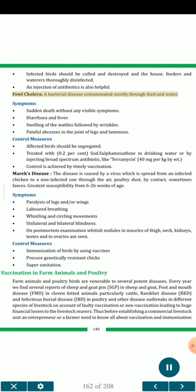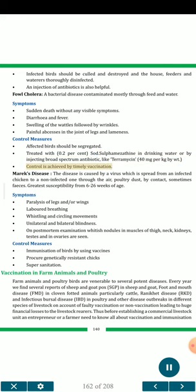Fowl cholera — a bacterial disease contaminated mostly through feed and water. Symptoms: sudden death without any visible symptoms; diarrhea and fever; swelling of the wattles followed by wrinkles; painful abscesses in the joint of legs and lameness. Control measures: affected birds should be segregated; treated with 0.2 percent sodium sulphamethazine in drinking water or by injecting broad-spectrum antibiotic, such as pteromycin at 40 mg per kg body weight. Control is achieved by timely vaccination.